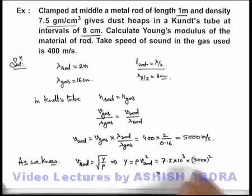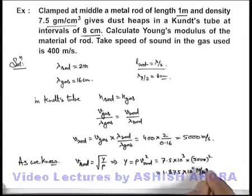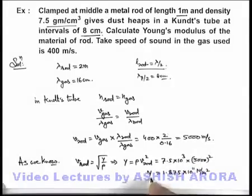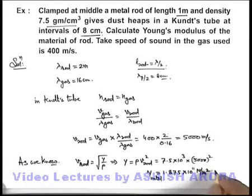On simplifying, the result I'm getting is 1.875 into 10 to the power 11 newton per meter square. That is the Young's modulus for this metal rod. That is the answer to this problem.